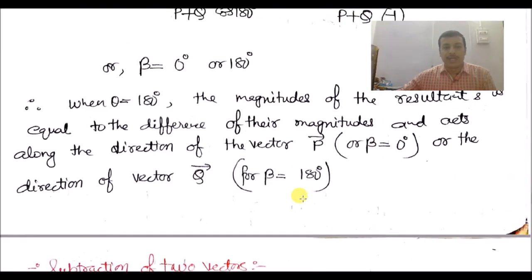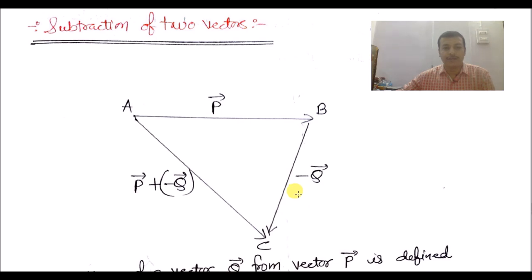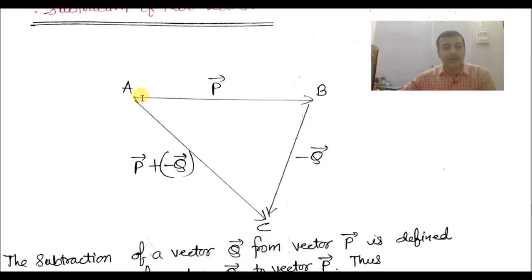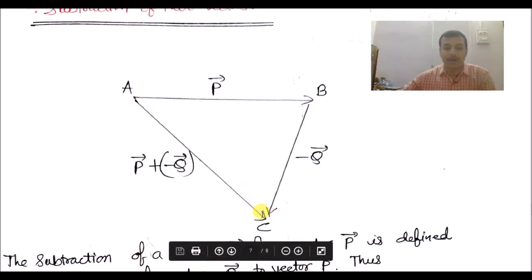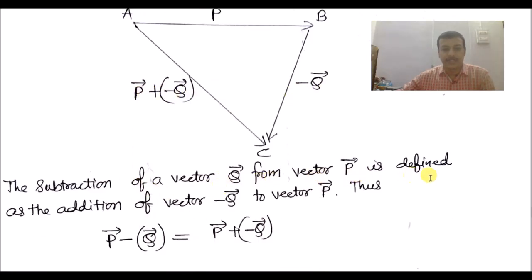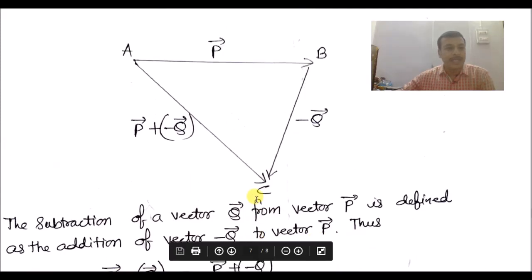This completes the addition of vectors and their analytical treatment. Next is the subtraction of two vectors. If we have two vectors P and Q and we subtract them, we write P minus Q. The triangle law states that instead of subtracting Q, we add minus Q. So the subtraction of vector Q from vector P is defined as the addition of vector −Q to vector P: P − Q = P + (−Q).